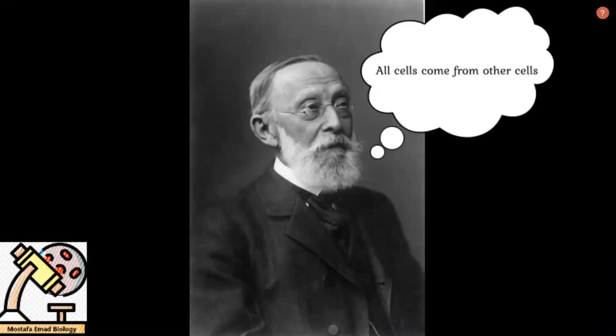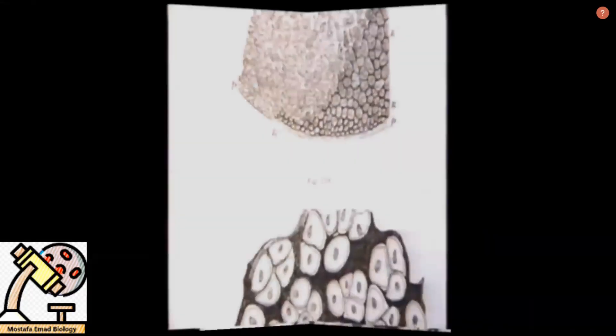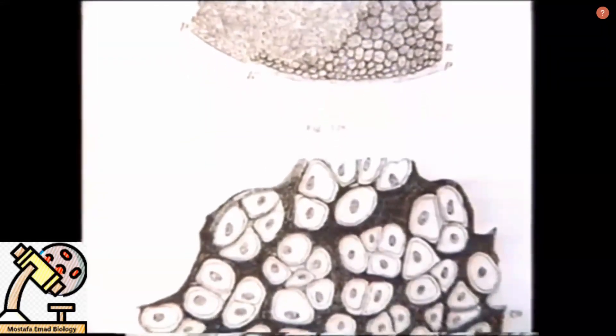In 1858, Rudolf Virchow saw cells divide and came to an equally astounding conclusion. All cells come from other cells. Virchow also felt that the root of many diseases was in this world of cells.